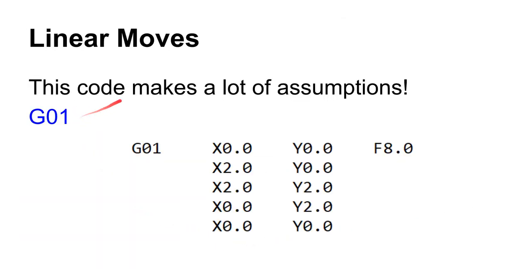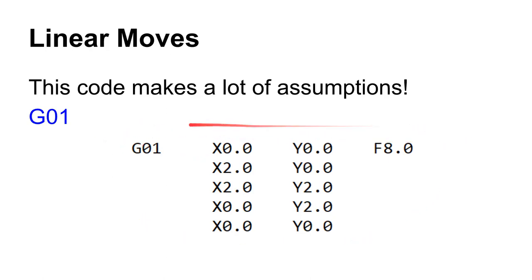The first code to look at is G01 (or G1). When the controller sees G1, it expects to see an X, Y, and/or Z value, each followed by a number to generally four decimal places. The decimal place is important. G01 also requires a feed rate — a linear move at a feed rate in inches per minute when in inch mode.